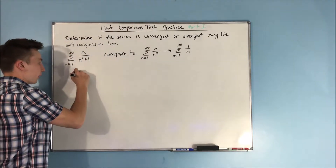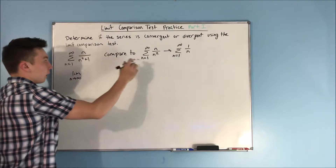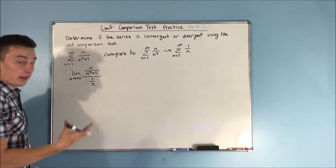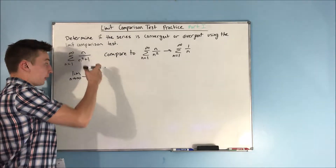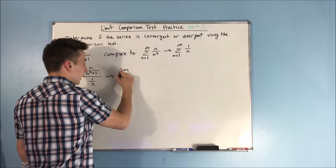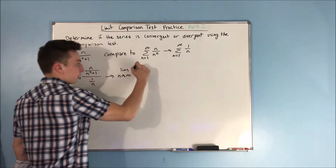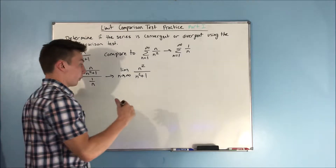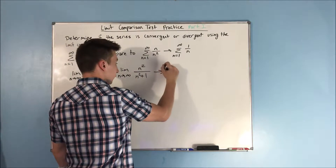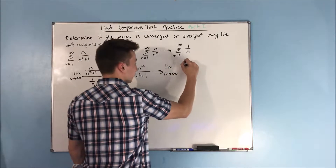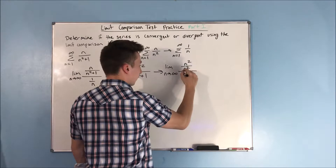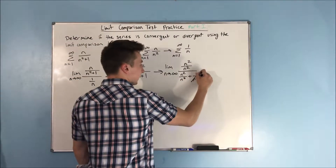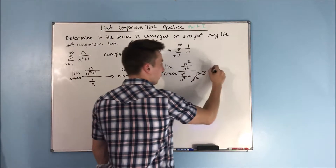Let's put that in our limit formula. The limit as n approaches infinity of a sub n — n over n squared plus one — over one over n. If we put this n to the top, we end up with the limit as n approaches infinity of n squared over n squared plus one. Dividing everything by n squared will be faster. You get n squared over n squared, over n squared over n squared plus one over n squared. This gives one over one, which equals one.